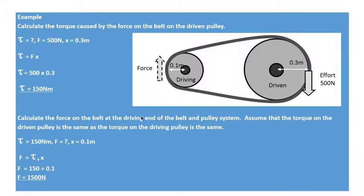Calculate the force on the belt at the driving end. Assume that the torque on the driven pulley is the same as the torque on the driving pulley. So if we've got 150 newton metres here, then we should have 150 newton metres here.